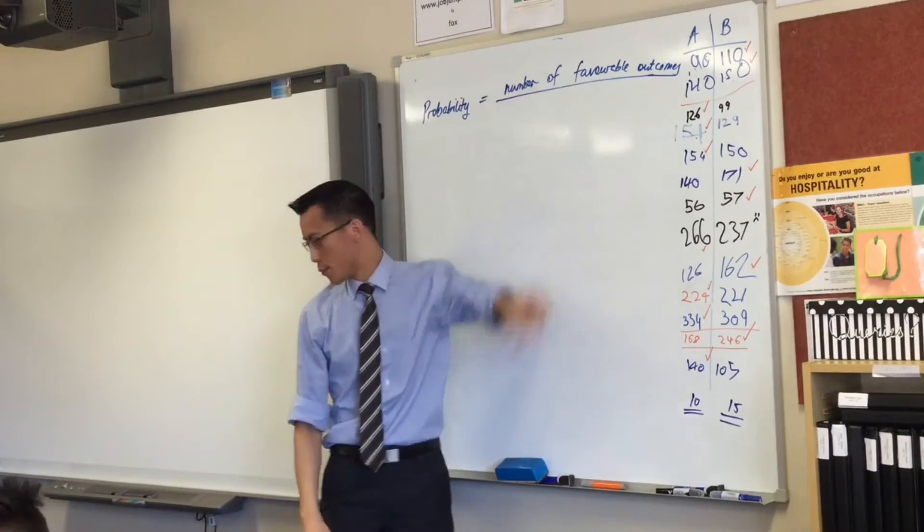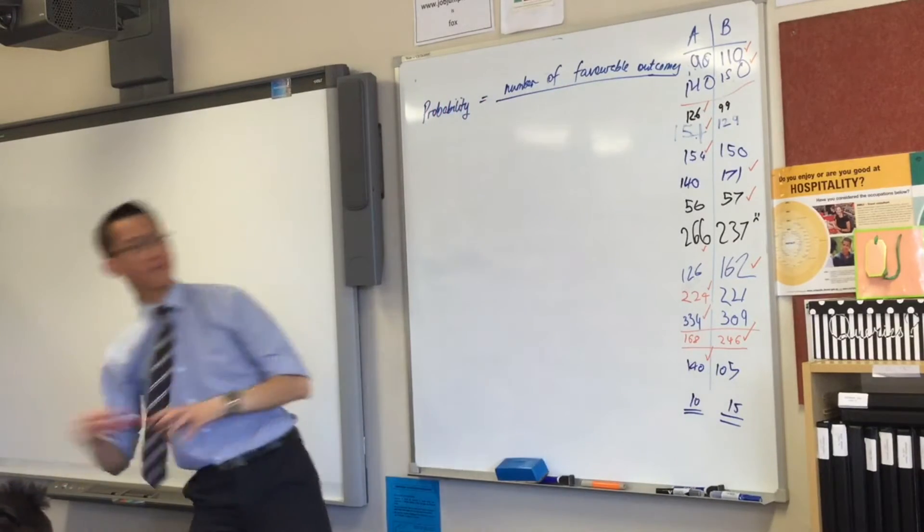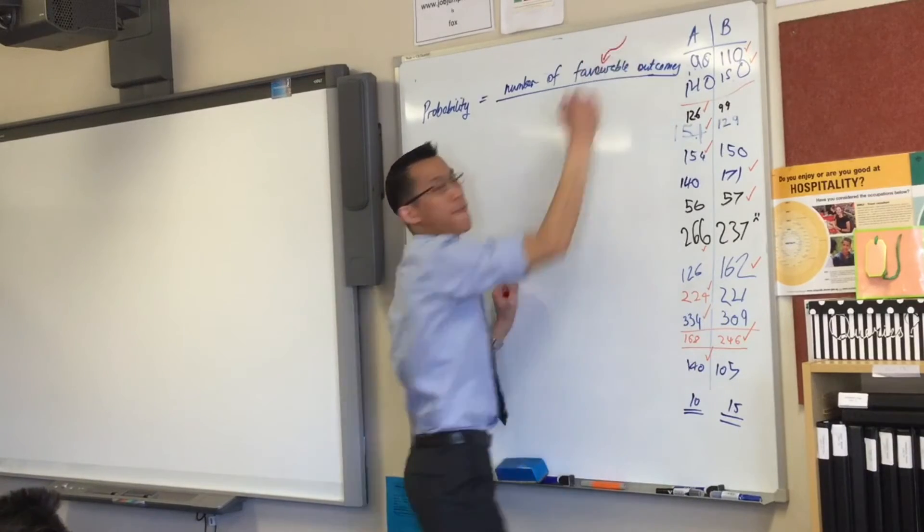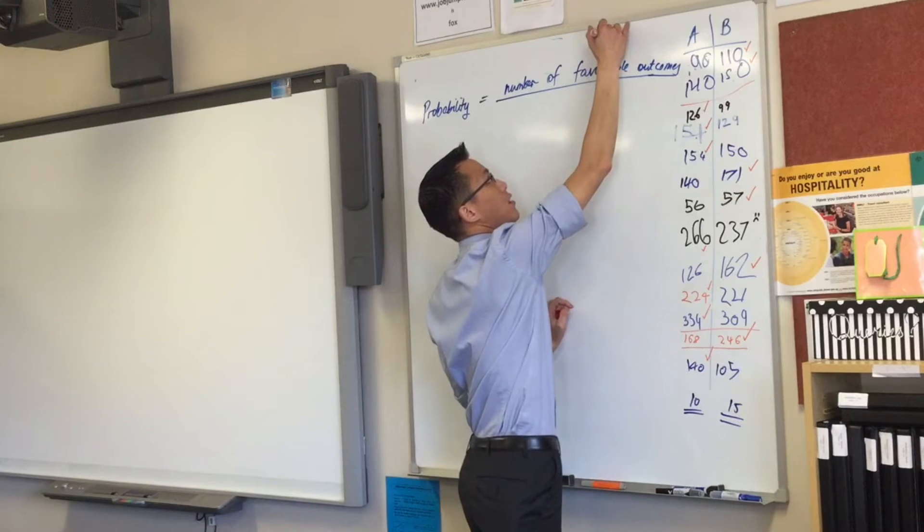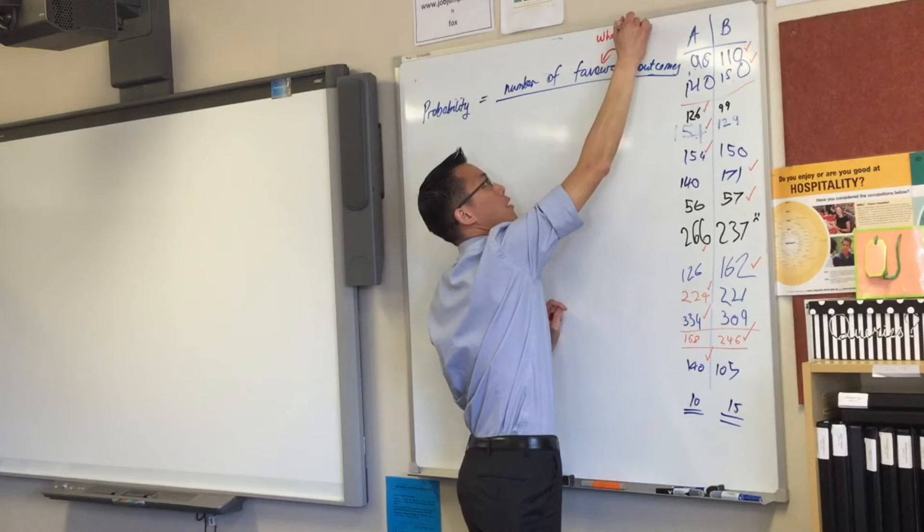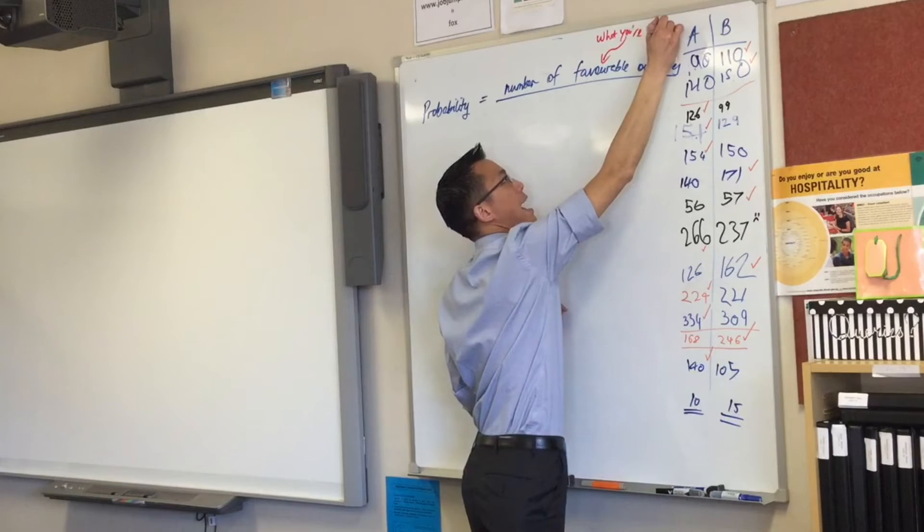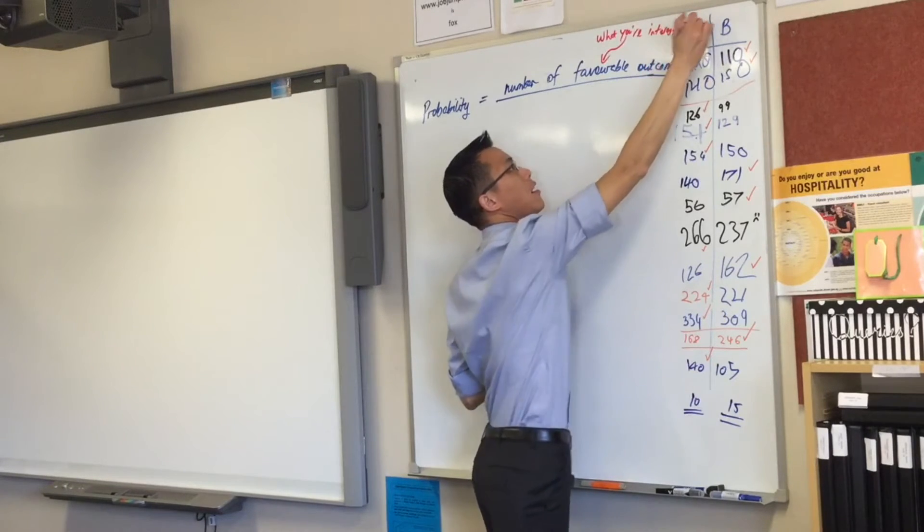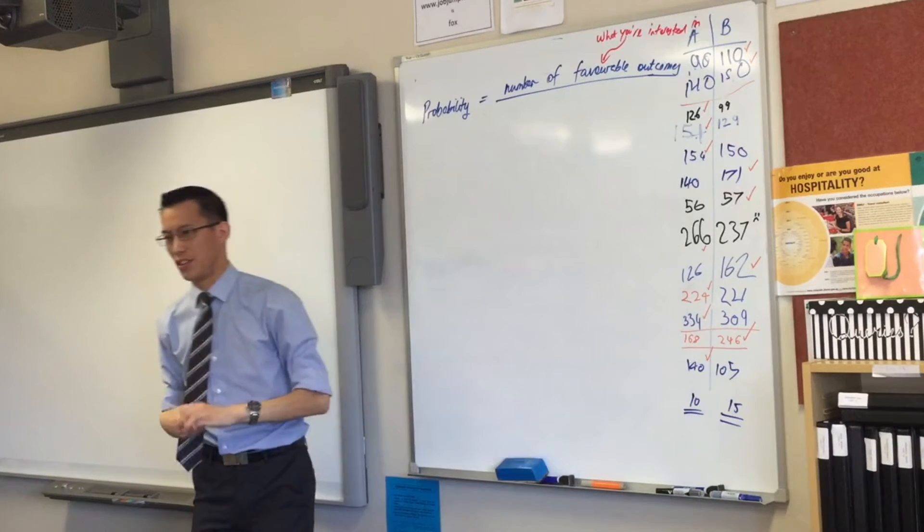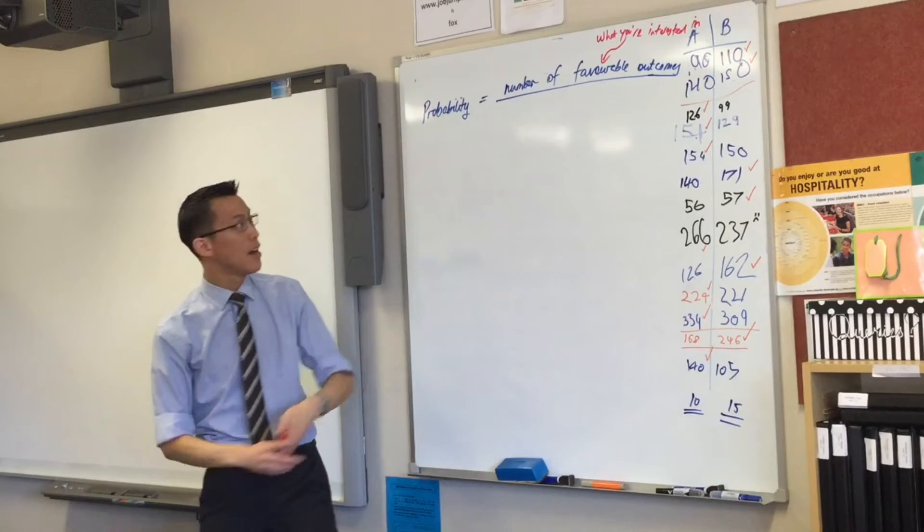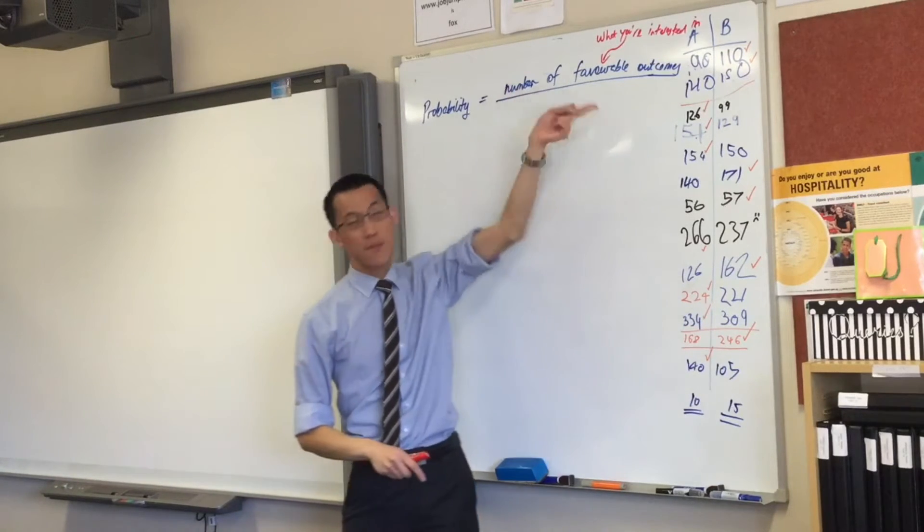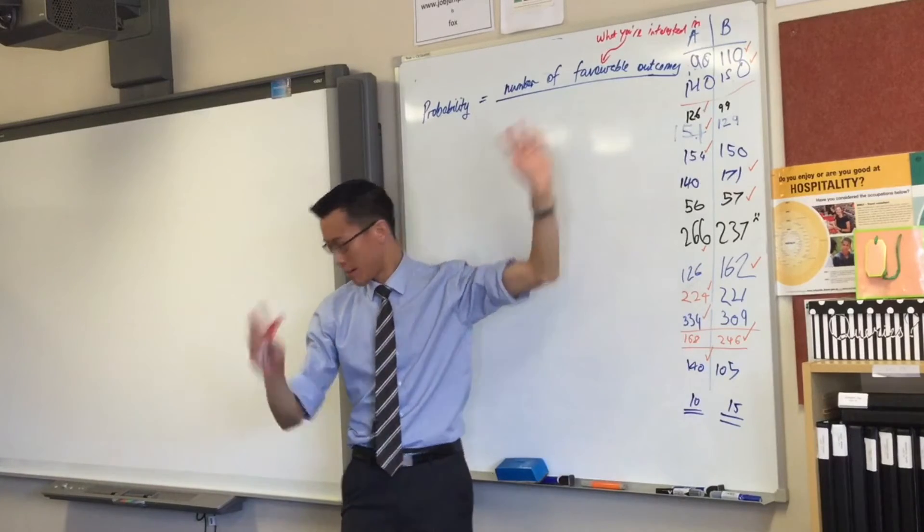Now, when I say favourable, maybe you want to draw an arrow to that, and what we mean by favourable is, the ones that you're interested in, right, what you're interested in. So, for example, for player A, what outcome were they interested in? What were they interested in rolling? A 6, right? A 6. For player A, their favourable outcome was a 6. Okay, good.